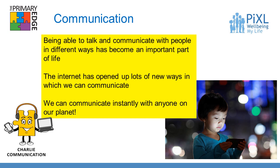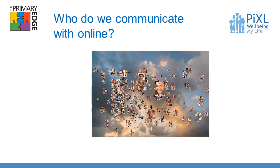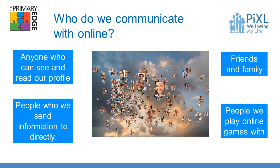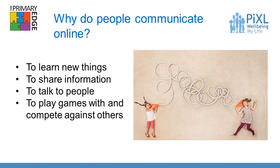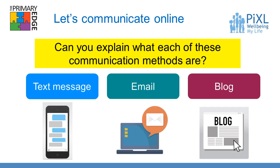The internet has opened up lots of new ways in which we can communicate. We can communicate instantly with anyone on our planet. Who do we communicate with online? We might communicate with anyone who can see and read our profile online, people we send information to directly, friends and family, and people who we play online games with. Why do people communicate online? We learn new things, share information, talk to people, and play games and compete against others.